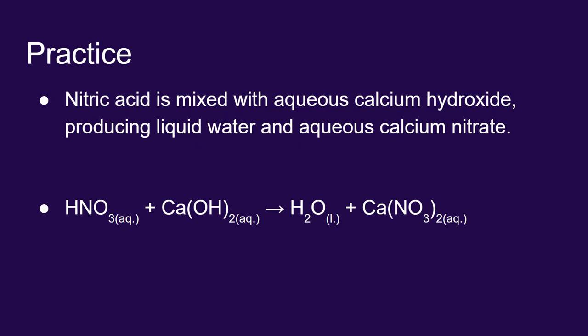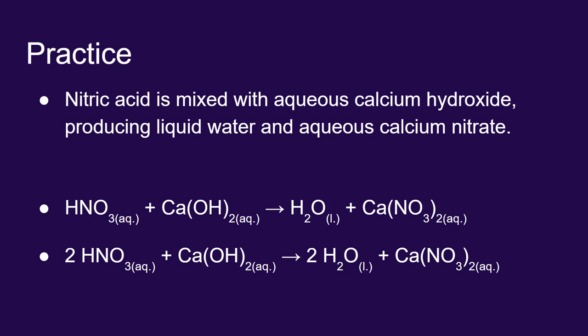One more time, nitric acid is HNO3, calcium hydroxide is Ca(OH)2, and they make water and calcium nitrate, which is Ca(NO3)2. And to balance that, you're going to want two nitric acids and two waters.